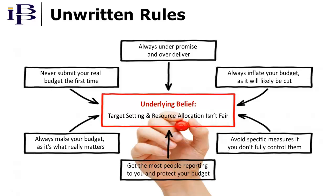For example, when people believe that they need to always under-promise and over-deliver, it undermines forecasting processes. Likewise, when people believe that they always need to make and spend their budgets, it undermines cross-functional resource allocation. The point here is that this connection between target setting and resource allocation is critical, especially for those that seek to establish effective performance cultures.